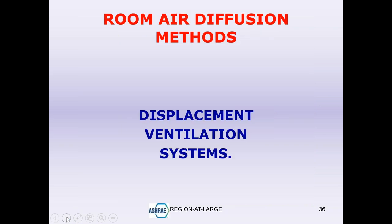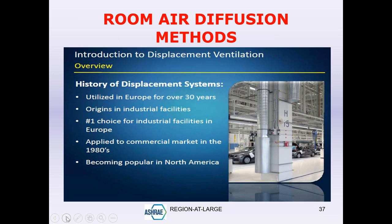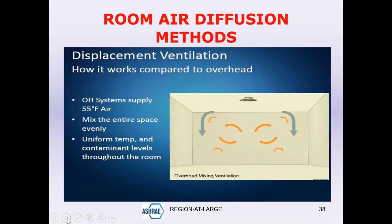That brings us to the next system: displacement ventilation. This is not new — it has been around for a long time, starting in Europe and used primarily in industrial facilities, but it's now become quite popular for occupied spaces as well. In an overhead mixing system, air is supplied from the top far from the occupied zone at around 55°F, everything mixes thoroughly, and the occupied zone is maintained with uniform temperature.